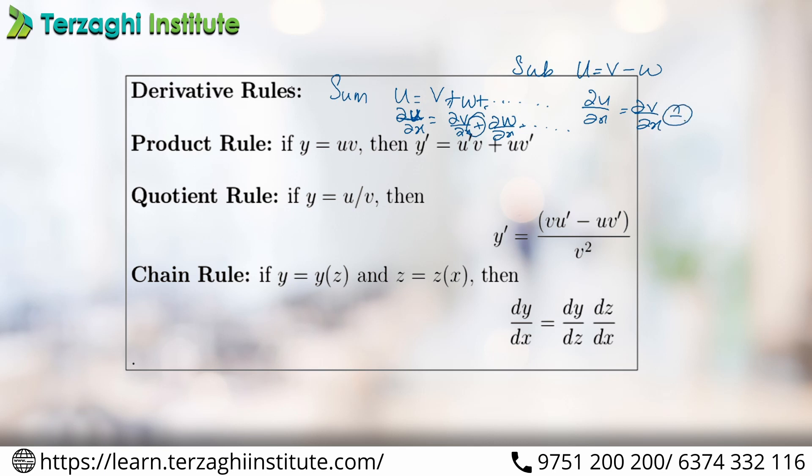Next is the product rule. Product rule: Y is a function of u and v, that is u into v.